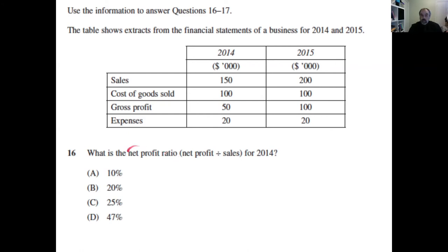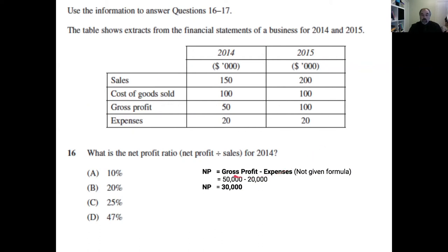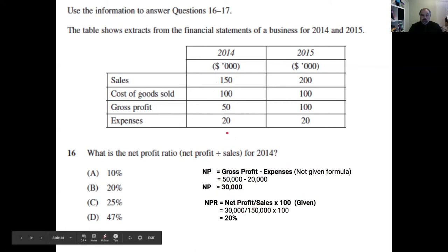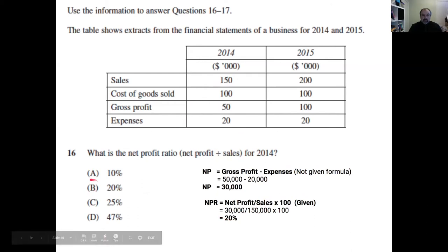To calculate the net profit ratio: first calculate net profit as gross profit minus expenses — $50,000 minus $20,000 equals $30,000 net profit for 2014. Then apply the formula: net profit divided by sales — $30,000 divided by $150,000 sales — expressed as a percentage gives 20%. Always check you're reading the correct year from the table, and remember that formulas not provided on the paper must be memorised.